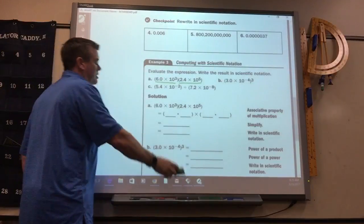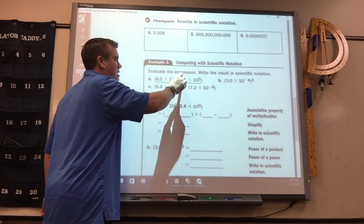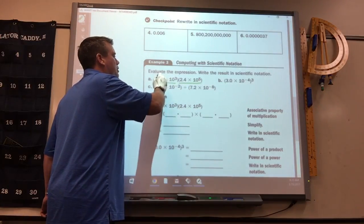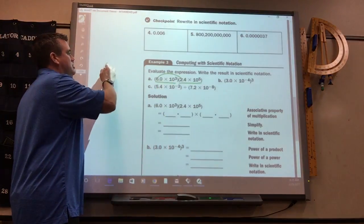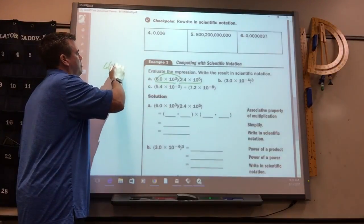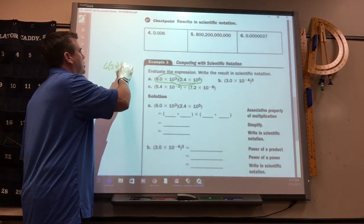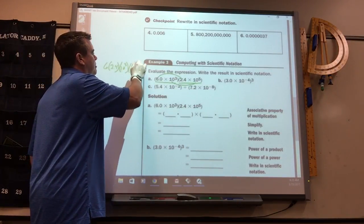So the same thing with these. You can rewrite this. It's this times this times this times that. So if you rewrote it, you'd put the 6.0, or just 6, times 2.4 times 10 to the 3rd times 10 to the 5th.